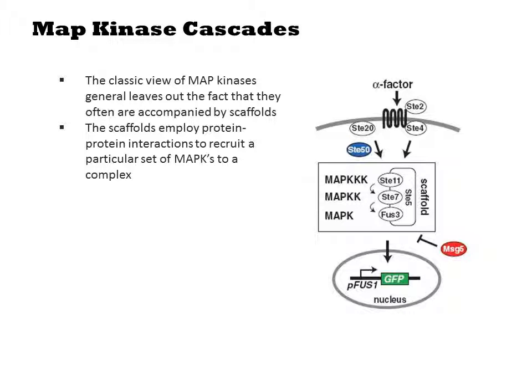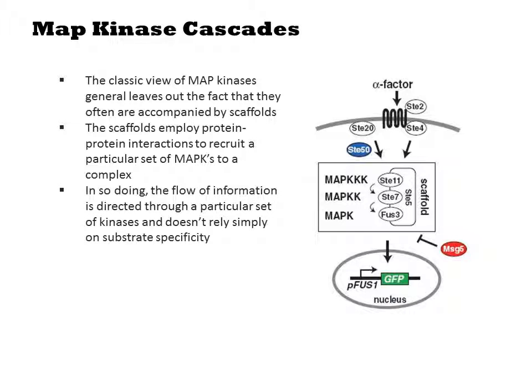These scaffolds employ protein-protein interactions to recruit a particular set of MAP kinases into a complex. In this diagram, we see three MAP kinases — ST11, ST7, and FUSE3 — being joined together by the scaffold protein ST5. In so doing, the flow of information is directed through a particular set of kinases and doesn't rely simply on the substrate specificity of protein-protein interactions.